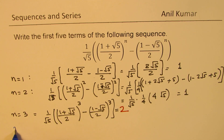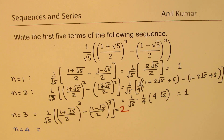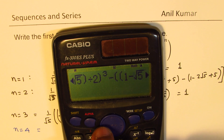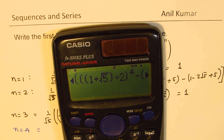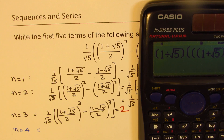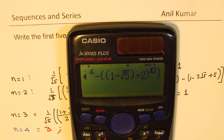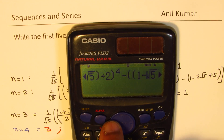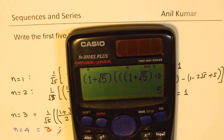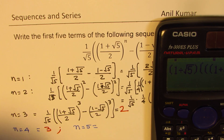For n equals 4, we change the exponent from 3 to 4 in the calculator. Using the same formula, we get 3 as our result. Then for n equals 5, changing the exponent to 5, we calculate and get 5. So for n equals 5, the answer is 5. This is a complicated formula with a very interesting result.